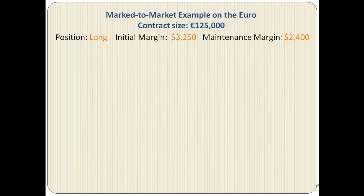Let's take a look at two examples. In the first example we have a speculator who is taking a long position, or wants to buy the underlying currency, the euro, expecting the euro to rise. The initial margin is $3,250 and the maintenance margin is $2,400.